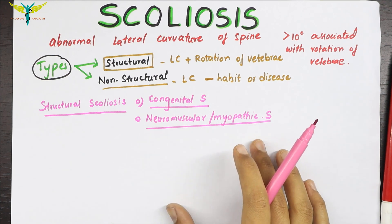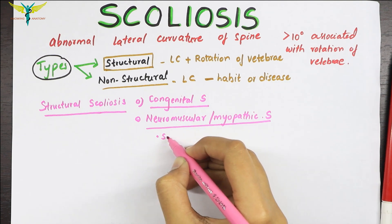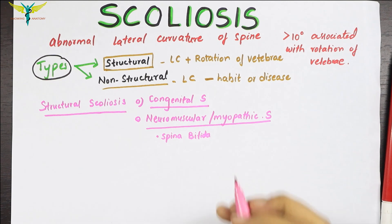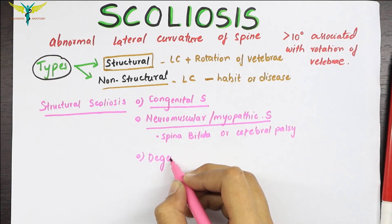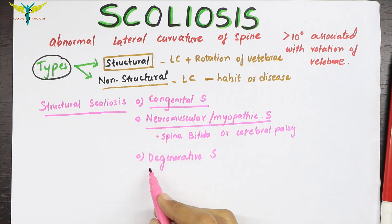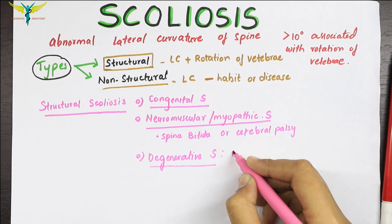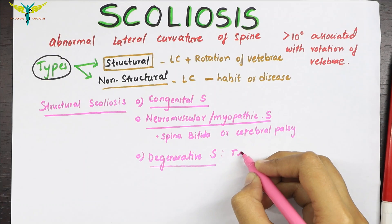Neuromuscular scoliosis is frequently seen in people with deformities like spina bifida or cerebral palsy, which are accompanied by paralysis. Degenerative scoliosis is also a form of structural scoliosis; it results from traumatic bone collapse, a history of back surgery, or osteoporosis.